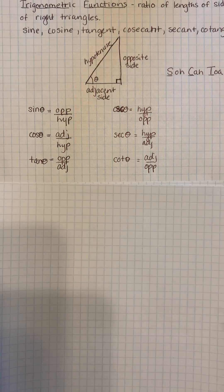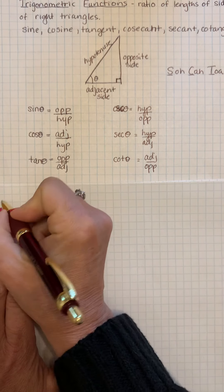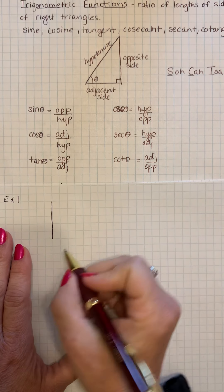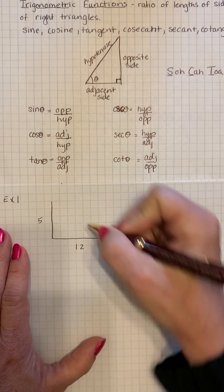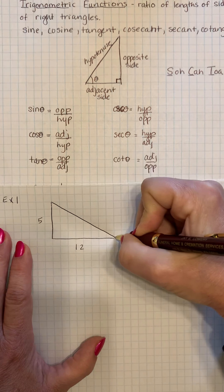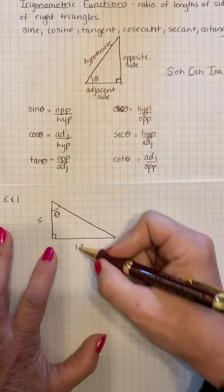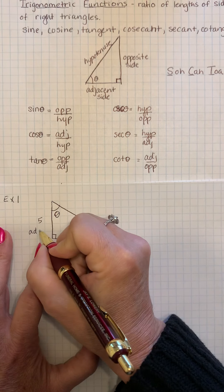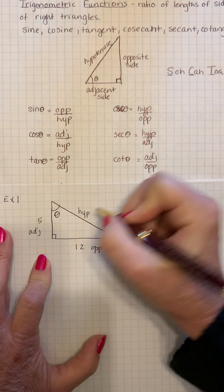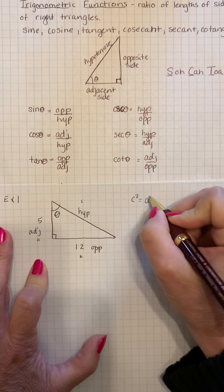Now what we're going to do is we're going to solve one of these triangle problems. I'm going to draw a right triangle — it's not drawn to scale. So this is example one. I'm going to make this side five and this side twelve. I'm going to call this angle theta. This is a right angle. Now, twelve is the opposite side, five is the adjacent. This is the hypotenuse. I don't know what the hypotenuse is, but if we call the sides A, B, and C, then C squared equals A squared plus B squared.